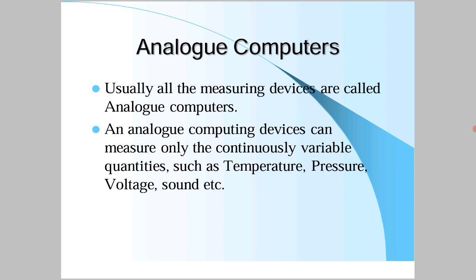Digital means measuring with numbers or a numbering system. Measuring with non-digital devices is called analog. Digital computers use numbering systems, whereas analog computers measure continuous quantities like temperature, pressure, heat, and heartbeats without digital signals.